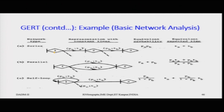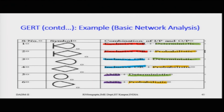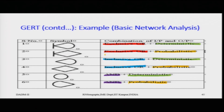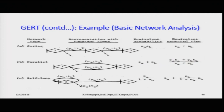Now let us consider the series concept. In a series network, we have three components side by side. Going from node 1 to node 2, the arc has probability PA and time TA; from node 2 to node 3, the arc has probability PB and time TB. This is an exclusive OR with probabilistic output node. The series can be extended with nodes 1, 2, 3, 4, 5, 6 and corresponding probabilities PA, PB, PC, PD and times TA, TB, TC, and so on.